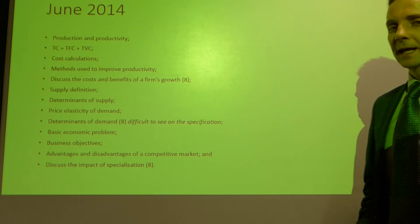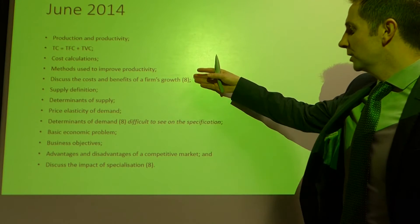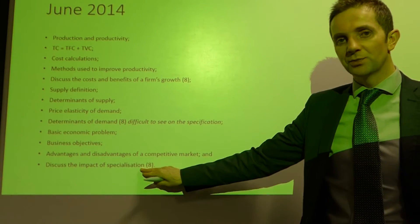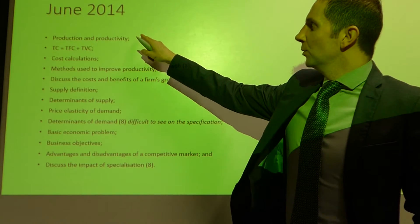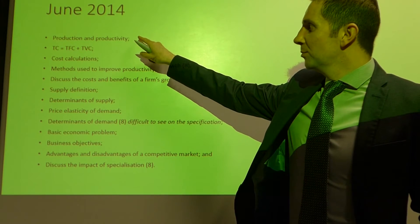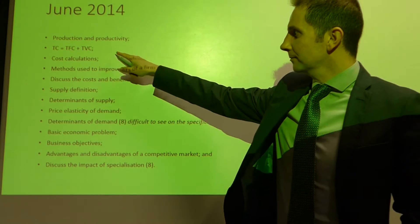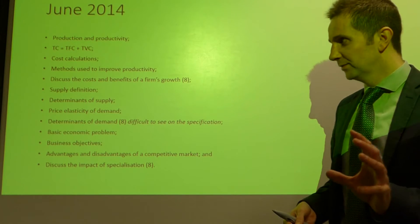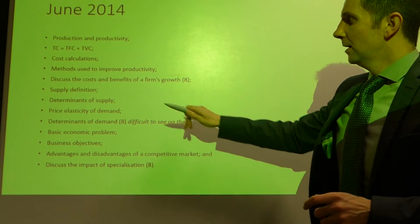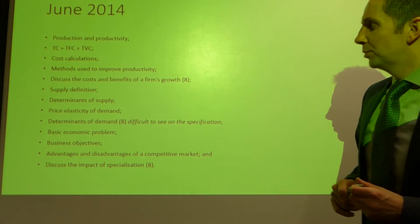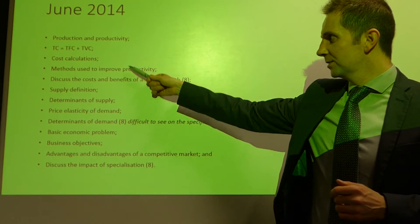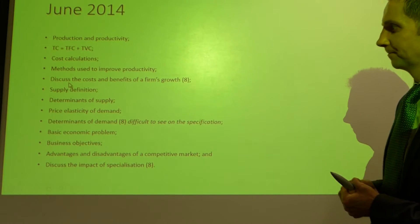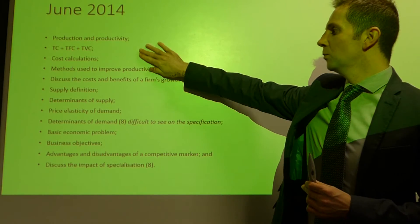June 2014 — areas of assessment: three questions again, three eight-markers. The final question was, look, specialisation once again. Started with production and productivity — knowing the difference between the two. You're asked to calculate total costs, so you need to know the total cost equation: total fixed costs plus total variable costs. Identify methods used to improve productivity, and the discuss part of that question was: discuss the costs and benefits of a firm's growth — eight marks. That was all question one.